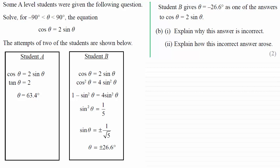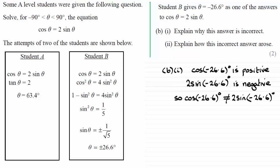So when you do the cos of minus 26.6 degrees, you get a positive answer. And when you substitute it into the right hand side for 2 sine of minus 26.6 degrees, it turns out to be negative. And so the left hand side does not equal the right hand side.